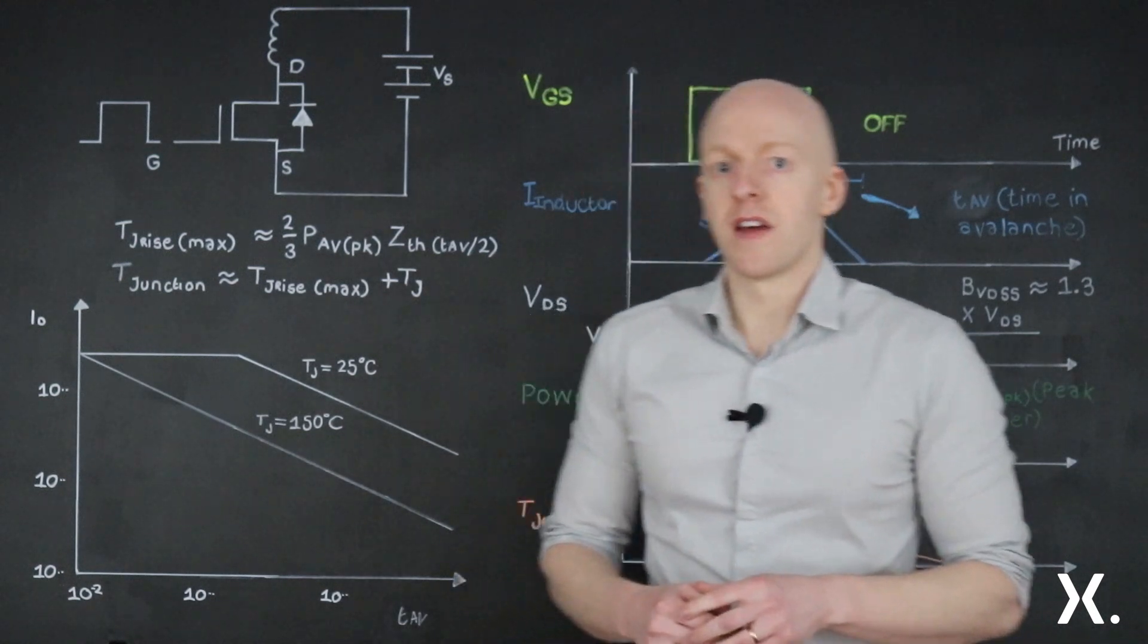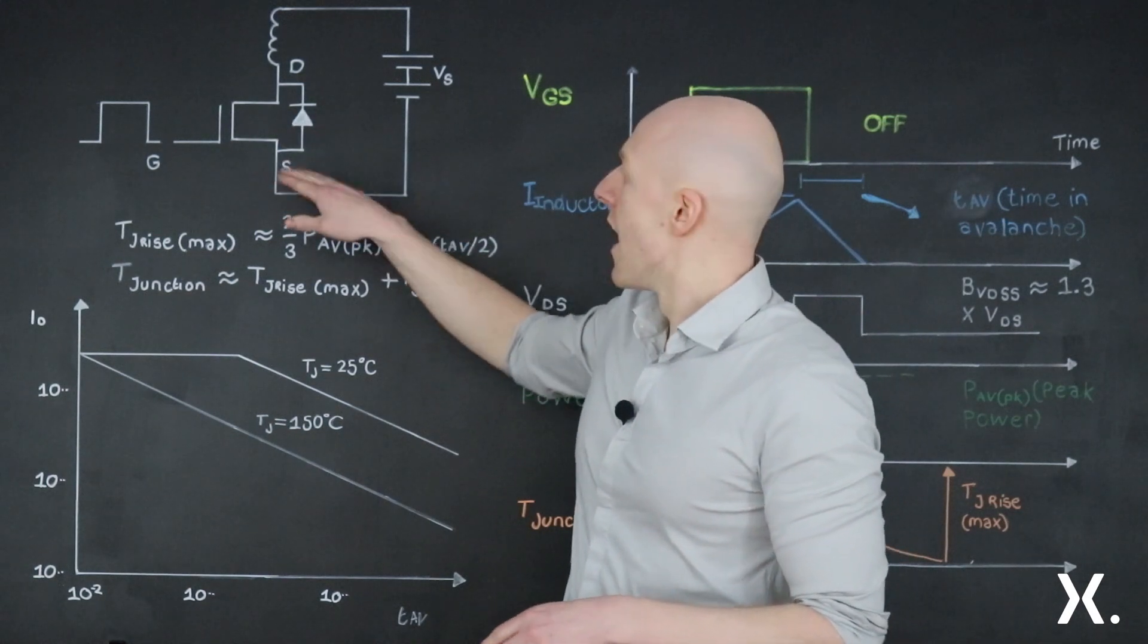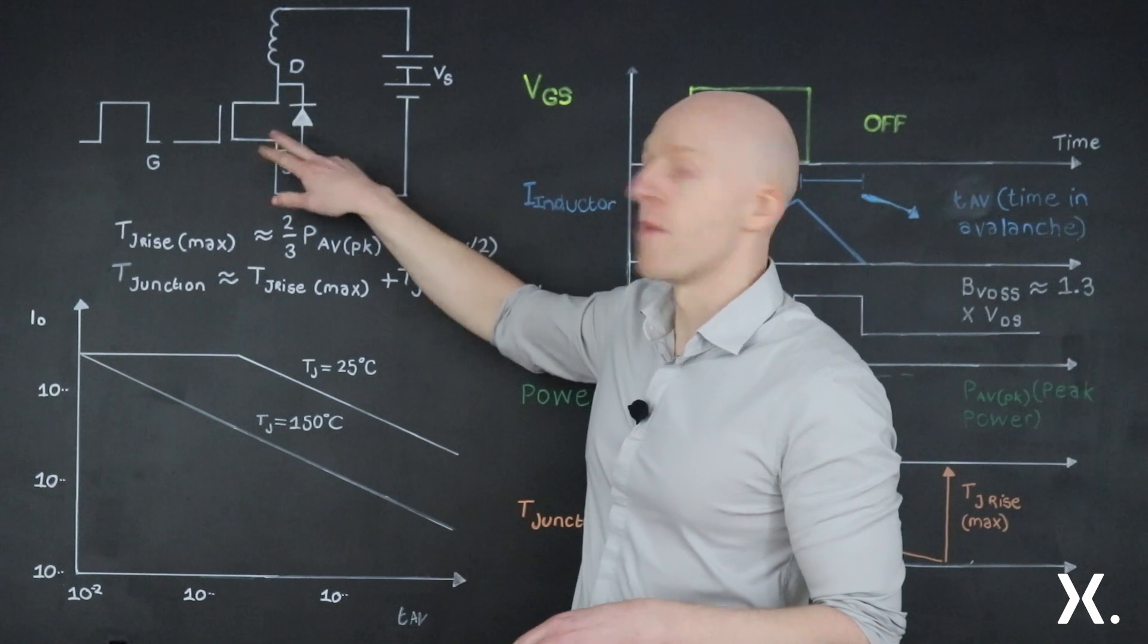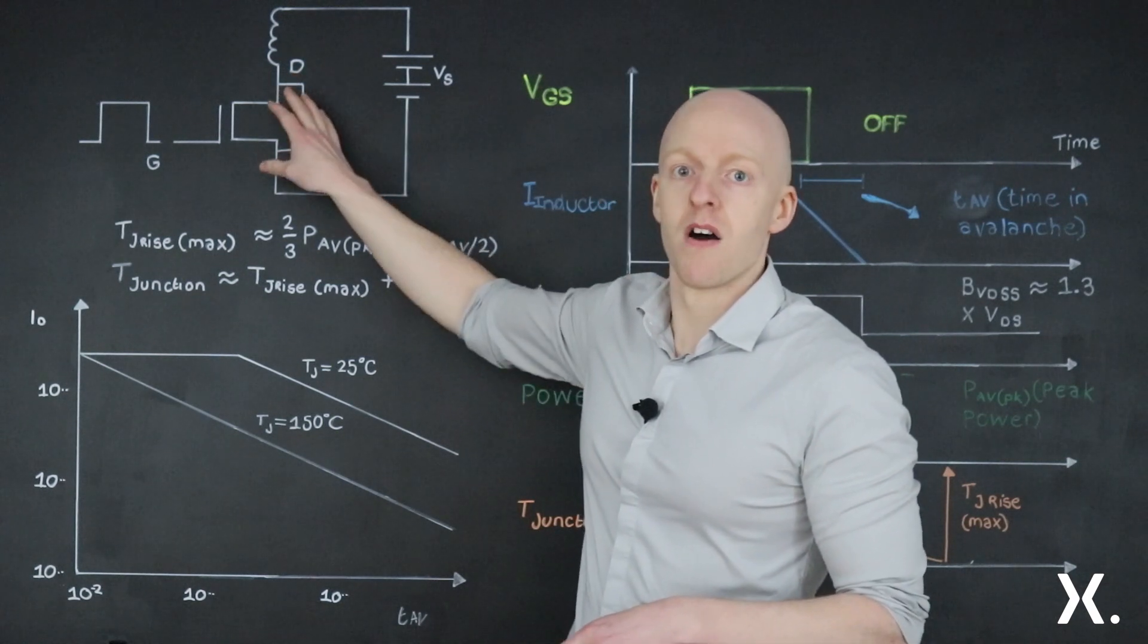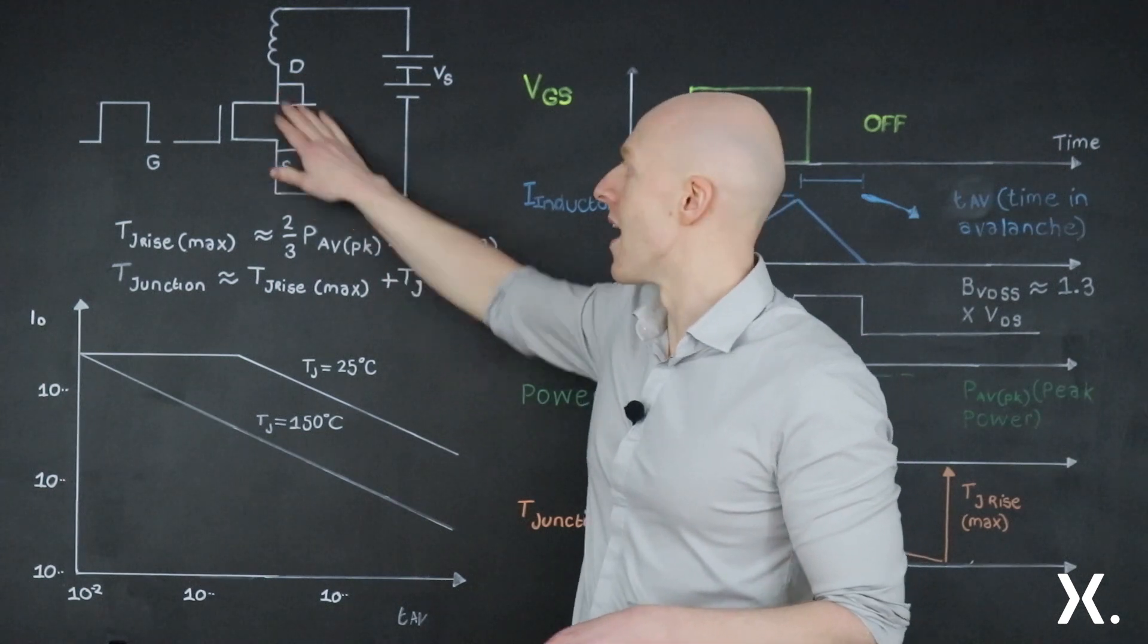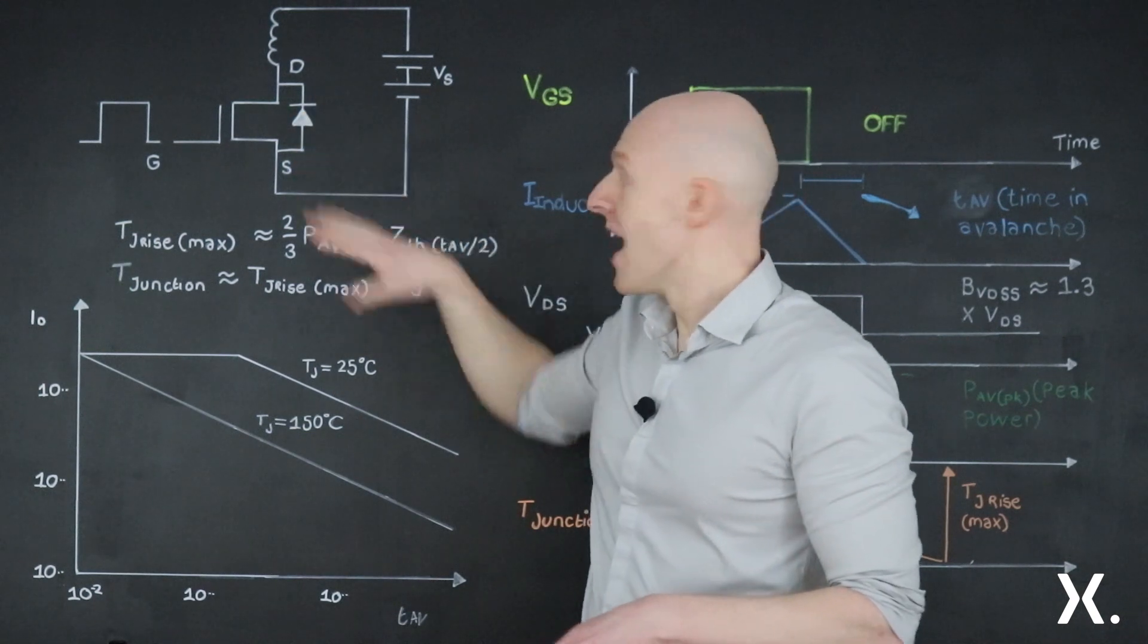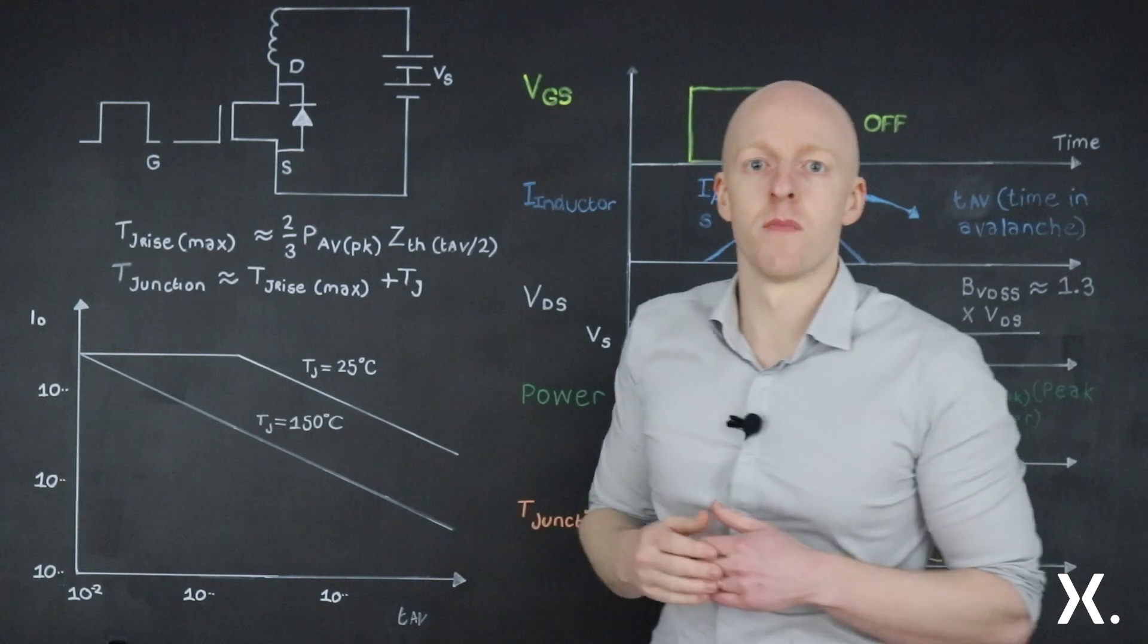So first let's look to the schematic up here where we have a MOSFET. When you see a schematic of a MOSFET, you always see this body diode. Now that's not an extra component, that's an intrinsic part of when you make a MOSFET. Every MOSFET will have an internal body diode that is the opposite polarity to the MOSFET. And it's this diode that gives you your blocking voltage or your VDS rating for the MOSFET.